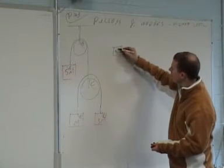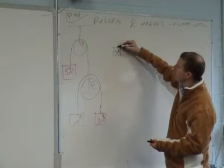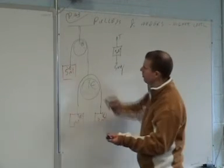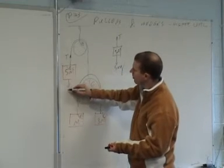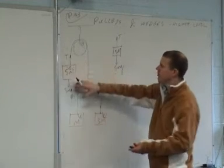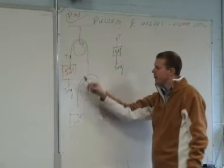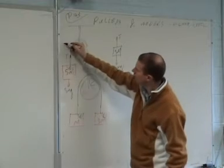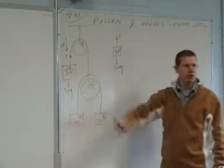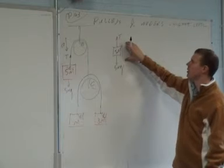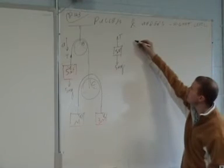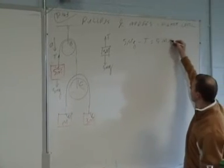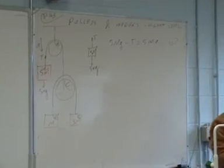For the 5m mass, the force up is T and the force down is 5mg. So we have a force up of T and a force down of 5mg. The system has a mass of 5m on the right-hand side and 4m on the left, so it moves down with acceleration a. The equation of motion is: 5mg minus T equals 5m times a. That's equation number one.